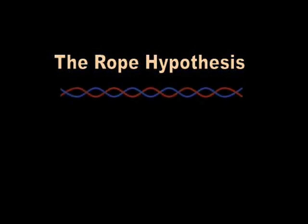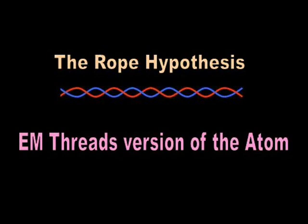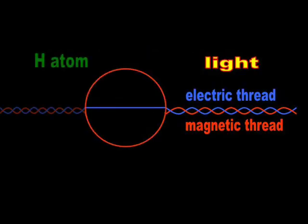Under the rope hypothesis, the atom finally receives a rational physical interpretation. The electric and magnetic threads fork at the boundary of an atom. The electric thread continues straight to the center of the atom and out the other end.